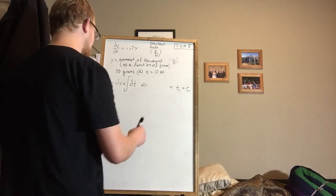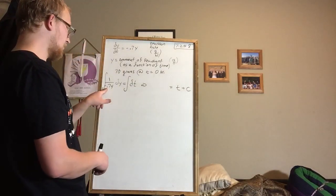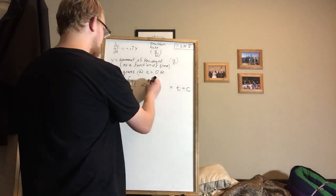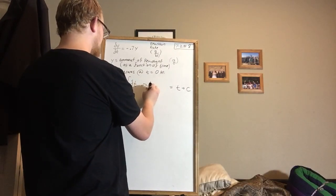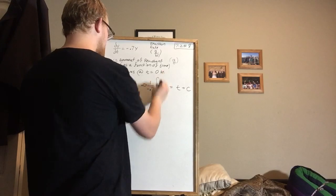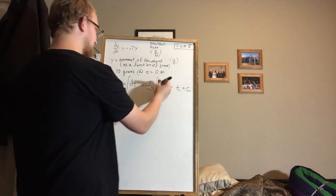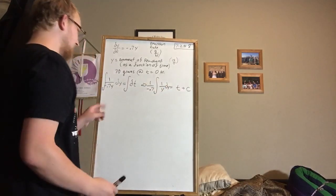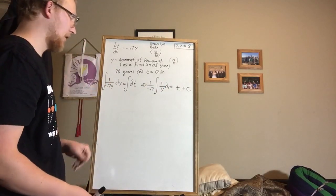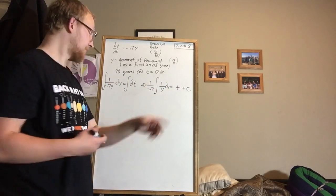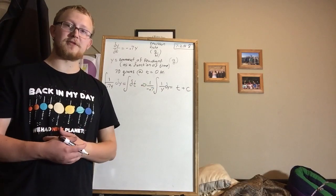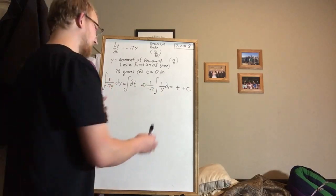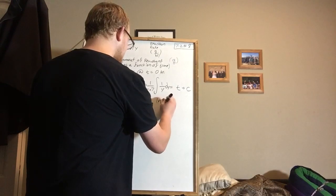The next step is we're going to pull out this 1 over negative 0.7. It's kind of getting in the way. We can pull it out of the integral because it's a constant. And we're still left with 1 over y dy. The integral of 1 over y with respect to y is the natural log of y.